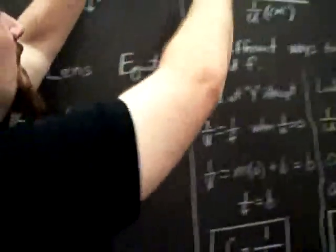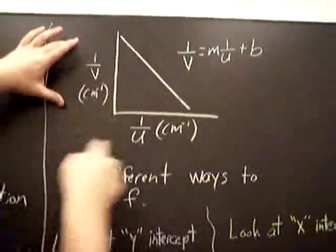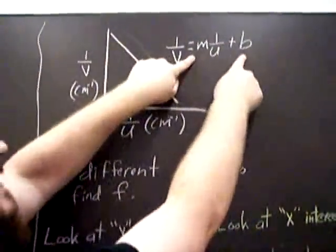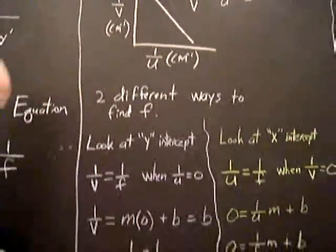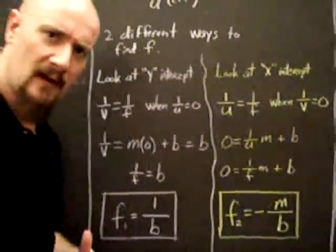So if we could find a series of V values, a series of U values, we could plot this relationship, get a line, get an equation for that line. And from this M and this B, we could find two different values for the focus. How can we find two different values? By concentrating on different parts of the graph.